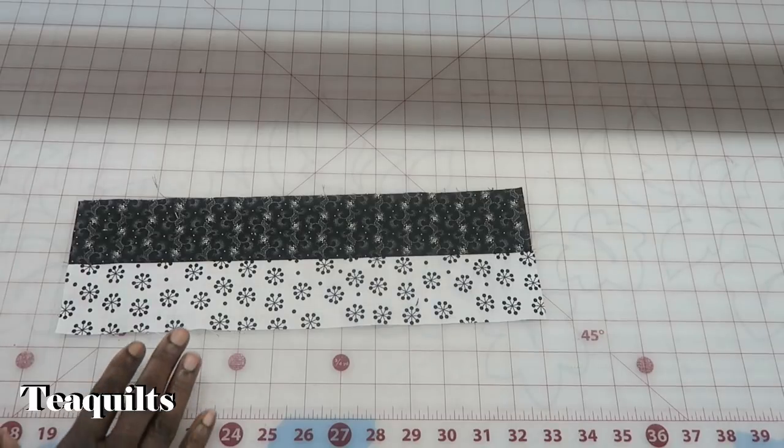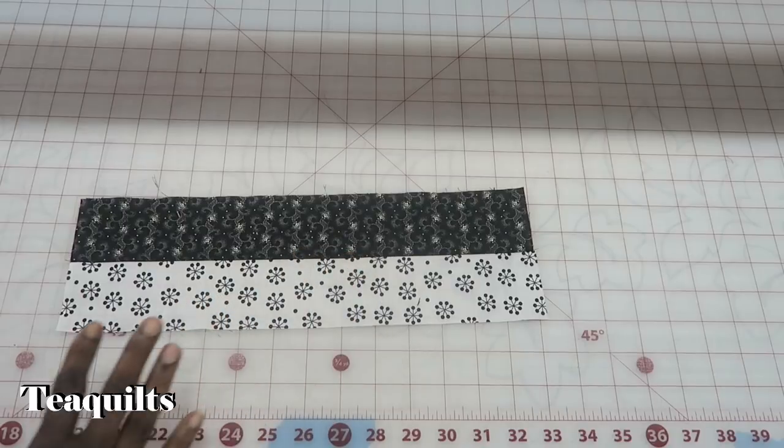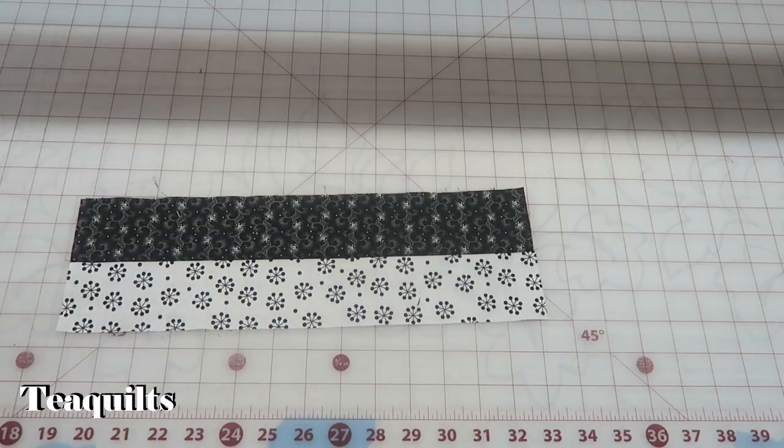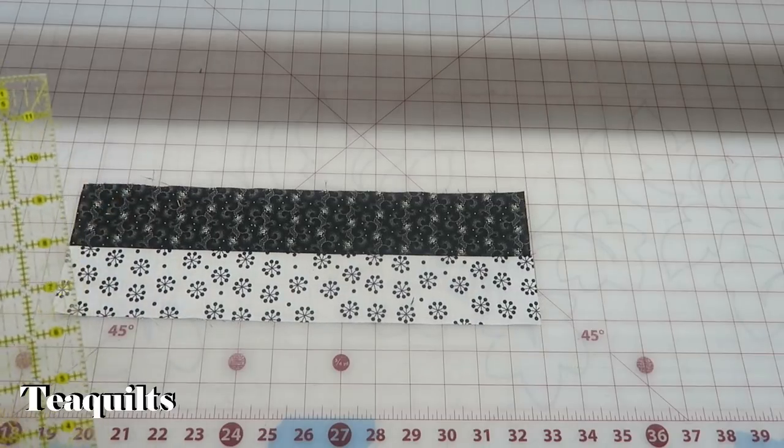I have sewn my seam and then I pressed my seam towards my dark print. I decided not to press these seams open. It just depends on how you're going to set these blocks together and I will let the maker decide how they want to set this block together.